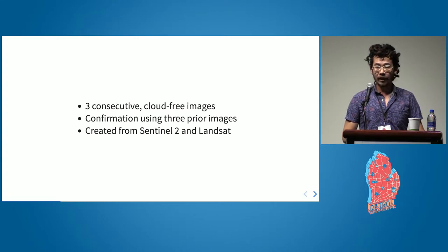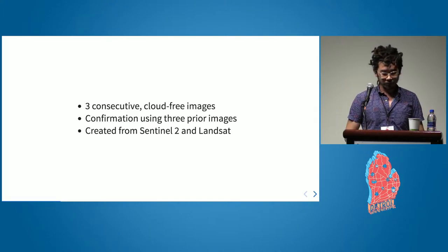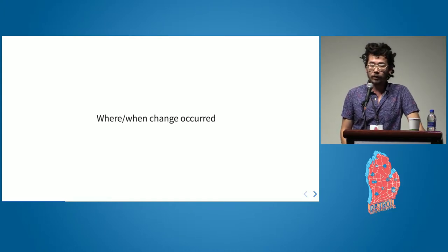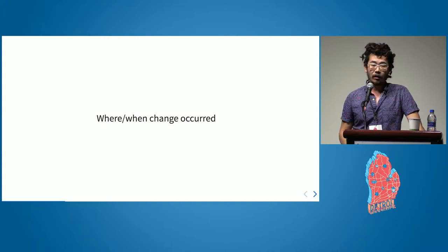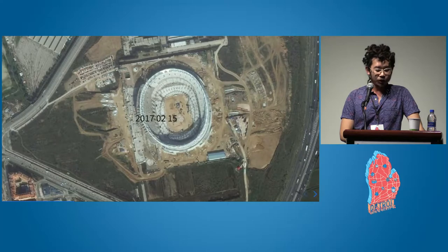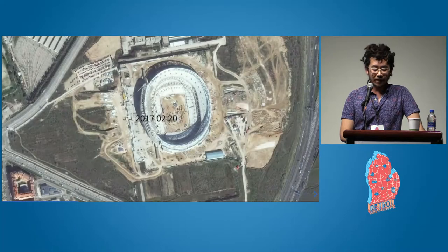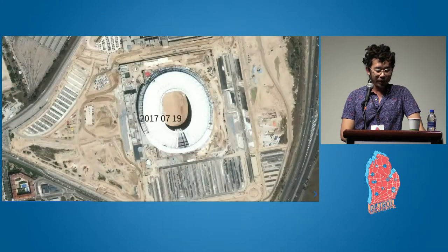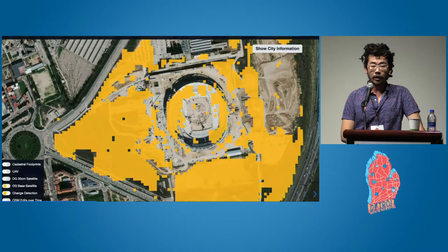Just to reiterate: this is using free imagery to output this information. Essentially what you get is a picture of where change has occurred and when. There are a lot of useful applications for this, a lot of which concern mapping. This is another scene from Madrid — you can see this stadium developing over the course of a couple of months, and then what the actual scene looks like in the Urchin platform.